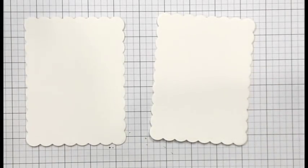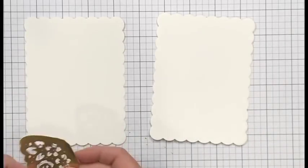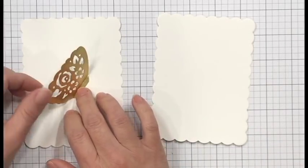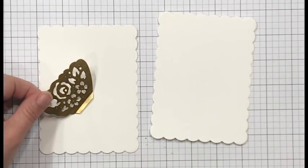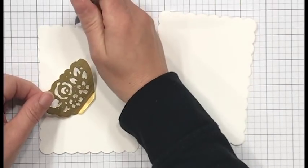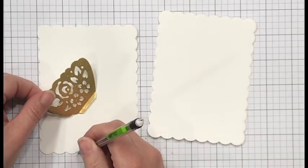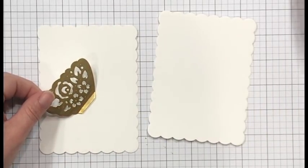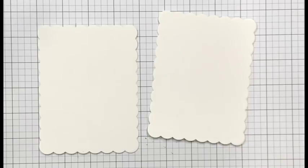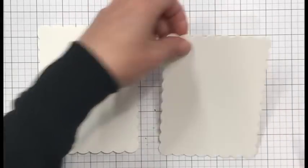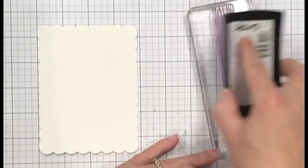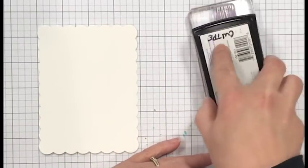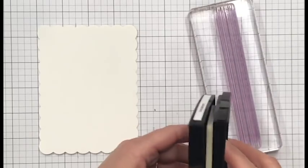I also cut out two other panels. This is Neenah Solar White cardstock of just the full panel with that large frame die. And then I also cut that little butterfly out with some gold foil cardstock. I'm placing that here on my card panel and drawing myself a couple little lines because I'm going to take this Distress Pattern Stamp and do some heat embossing on the front of my card panel.